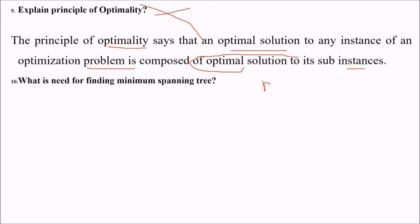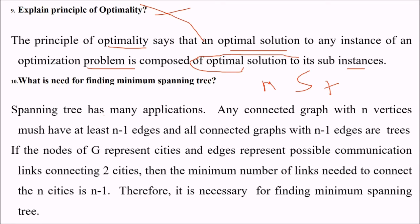What is the need for finding minimum spanning tree? Why do you need this MST? Spanning tree has many applications. This is a graph problem. Any connected graph with n vertices must have at least n minus 1 edges and all connected graphs with this n minus 1 edges are trees. If the nodes of this graph represents cities, if nodes of this graph G represent cities and edges represent possible communication links between these two cities, then the minimum number of links needed to connect n cities is n minus 1. So it is necessary for finding MST minimum spanning tree. What is critical path? The path of longest length is called the critical path, the critical path because we are concerned about this path only while finding the solution to various problems.